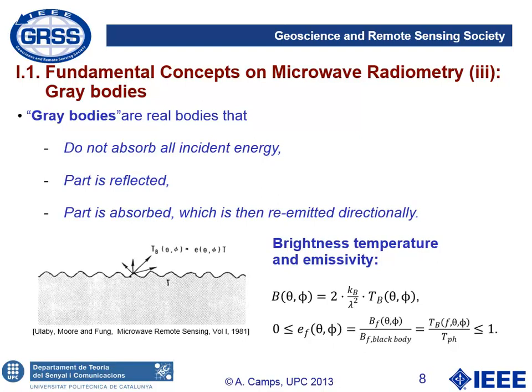In reality, we do not have black bodies, even though we may have very good approximations. Most bodies or surfaces found in nature are not black bodies but behave as what we call gray bodies. Gray bodies do not absorb all incident energy — part is reflected, part is absorbed, and the absorbed part is re-emitted in thermodynamic equilibrium, but directionally and with some polarization dependence. We define the brightness B as twice k_B divided by lambda squared, times the brightness temperature.